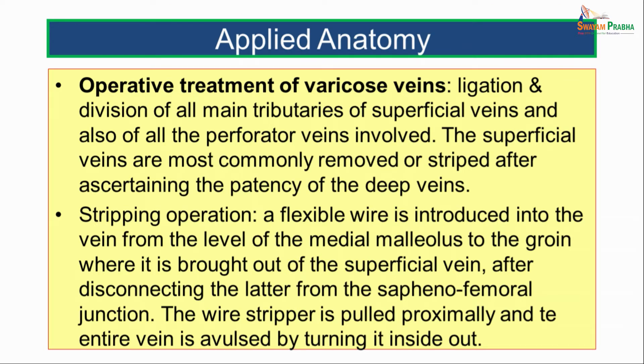The Perthes' test is done to test the deep veins. The patient is asked to stand up with veins remaining dilated, and a tourniquet is tied at the upper thigh. The person is asked to walk around. If the varicose veins are emptied while walking, that shows the deep veins are competent. If the varicose veins increase in distension and bulge further on walking, it is indicative that the deep veins are at fault.